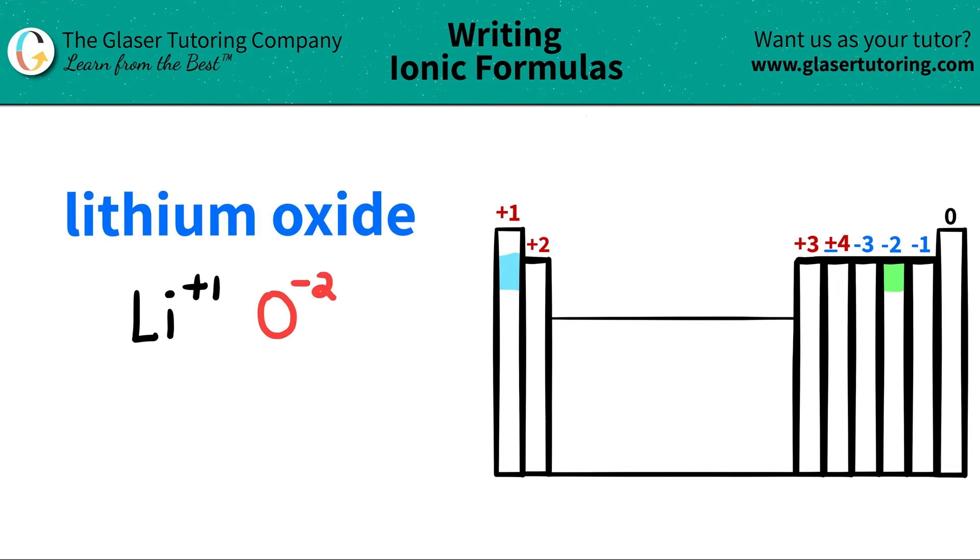Now all we're going to do is we're just going to crisscross these charges down to tell me how many of each I need. So this plus one crisscrosses down telling me that I need one oxygen, and this negative two crisscrosses down telling me that I need two lithiums. When you crisscross down, the charges vanish.